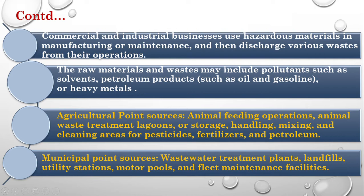Different kinds of pollution that can come from point sources include commercial and industrial businesses. Regarding agricultural point sources, animal feeding operations, animal waste treatment lagoons, and storage, handling, and mixing processes can deliver pollutants such as fertilizers and petroleum.